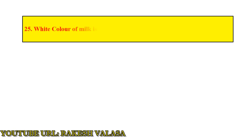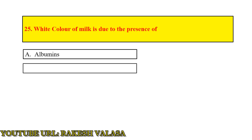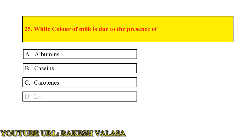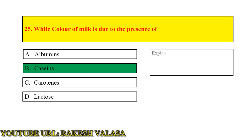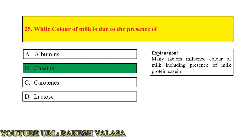Question number 25: White color of milk is due to the presence of — Answer: Casein. Explanation: Many factors influence the color of milk, including the presence of milk protein casein.